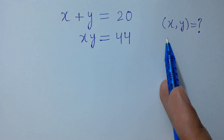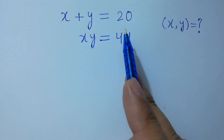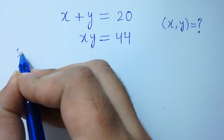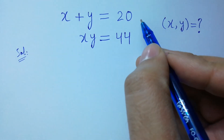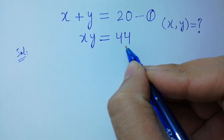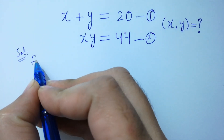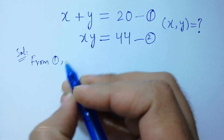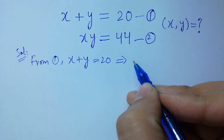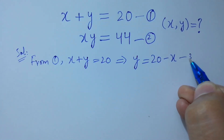Hello friends. Find the value of x and y if x plus y equals 20 and x times y equals 44. Let's have a solution. Suppose x plus y equal to 20 is the first equation, and xy equal to 44 is the second equation. From the first equation, x plus y equal to 20, then y equal to 20 minus x. Suppose this is the third equation.